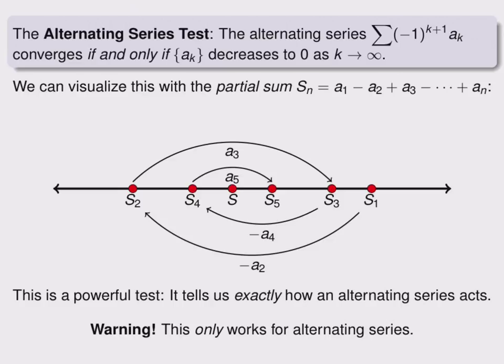This is a very powerful test because it tells us exactly how an alternating series acts. If we meet these hypotheses, or conditions, the series is guaranteed to converge, and it's also guaranteed to diverge in any other circumstances.